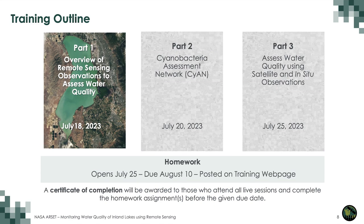There are three parts to this training. Today we will be talking about an overview of remote sensing observations to assess water quality. There will be one homework assignment that will be open on July 25th through the ARSET website and due on August 10th. A certificate of completion will be awarded to those who attend all live sessions and complete the homework assignment before the given due date.